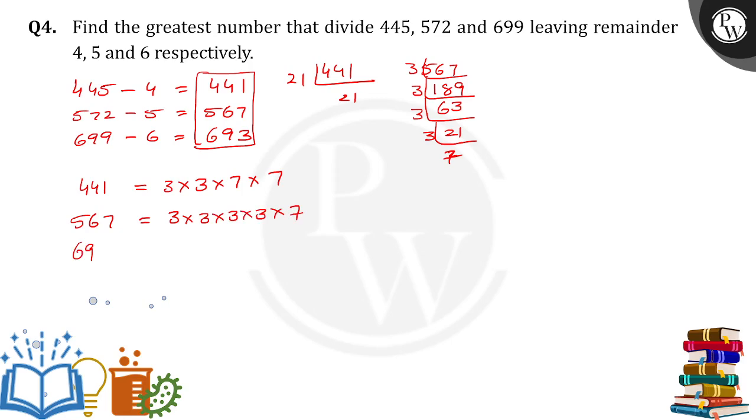Now one more number is 693. So how can we write 693? 693 is divisible by 3. For how many times?